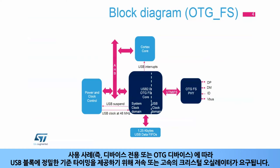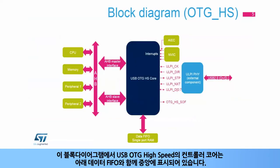The AHB peripheral bus enables read and write access of the controller registers and the power and clock control block. Depending on the use case, whether device-only or OTG device, a low- or high-speed crystal oscillator is necessary to provide an accurate timing reference for the USB block.